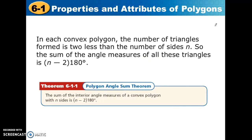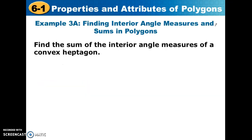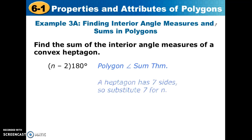Here's the polygon angle sum theorem that describes this, and we're going to use it in the next example. We want to find the sum of the interior angle measures of a convex heptagon. A heptagon has seven sides, so n = 7. Using the polygon angle sum theorem we plug seven into the formula, simplify, and get 900 degrees as the sum of all the angles in a heptagon.